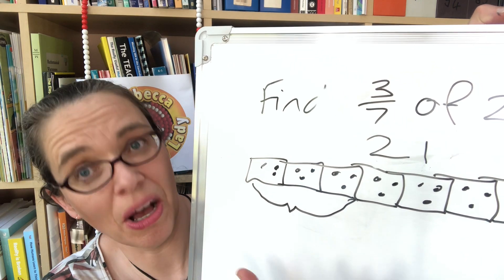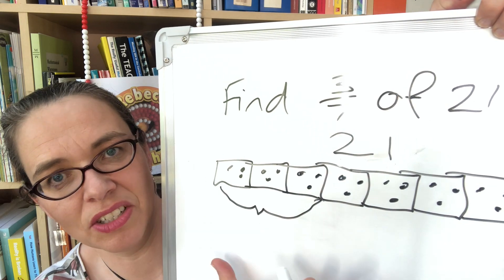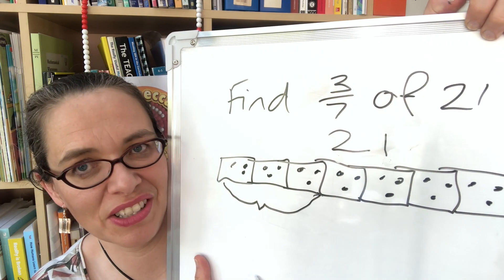So this is a kind of bar model and this is your second representation that can support thinking about fractions of amounts.